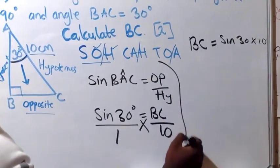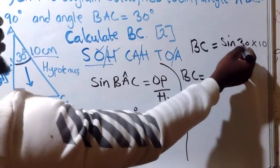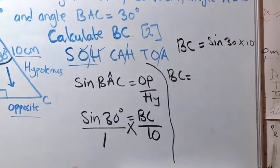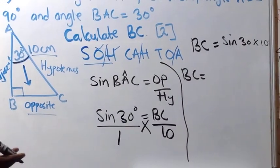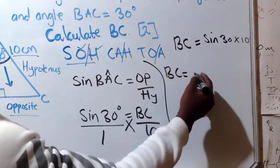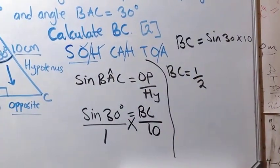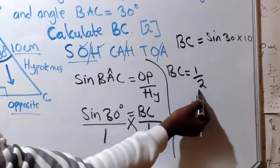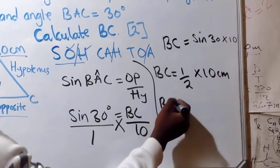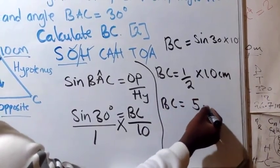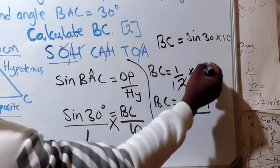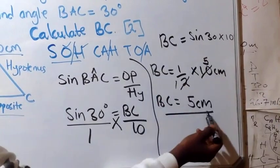Now sine 30 is a special angle with a known numerical value. Sine 30 equals 1 over 2, or 0.5. So BC equals 1/2 times 10, which gives 5. Therefore BC equals 5 centimeters.